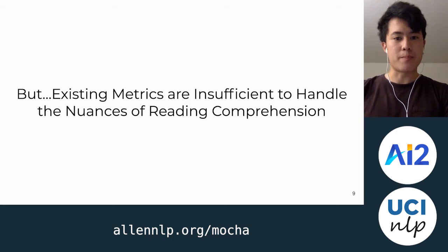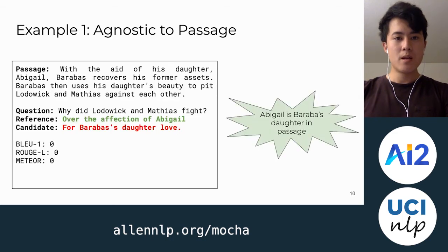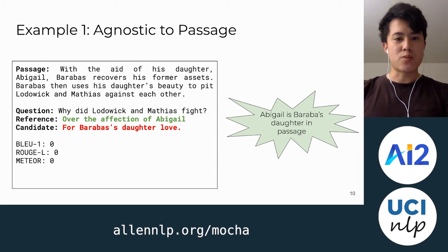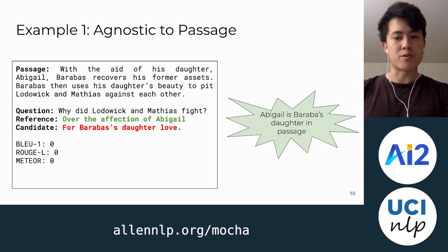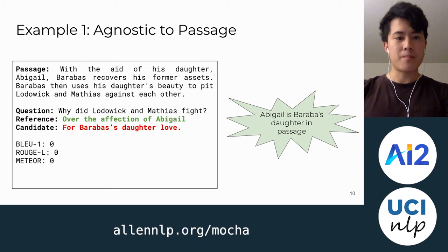I'll show some examples — feel free to pause if I'm going too fast. This first example shows that existing metrics are hurt because they are agnostic to the passage. The question is: why did these two people fight? The reference is 'over the affection of Abigail' and the candidate is 'for Barbra's daughter's love.' Abigail is Barbra's daughter in the passage, so this candidate is correct, but existing metrics assigned a score of zero.